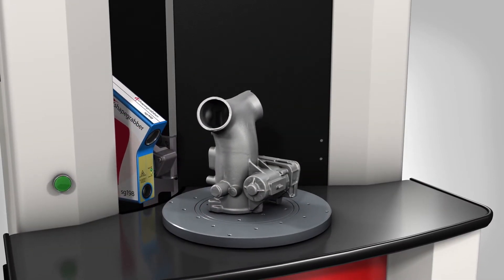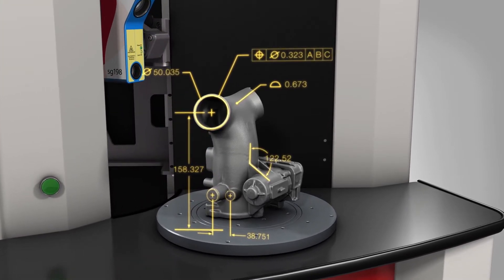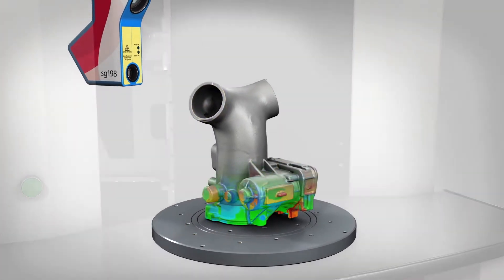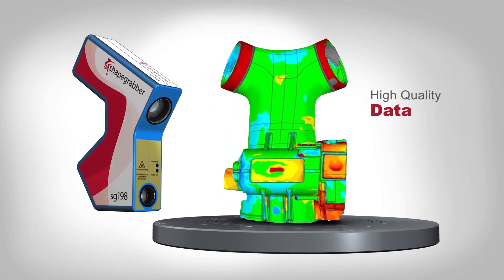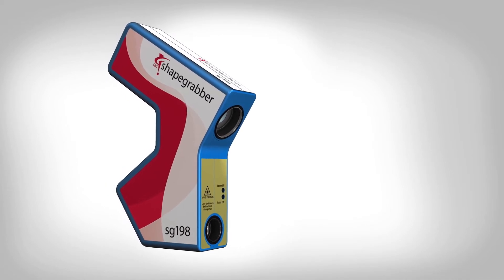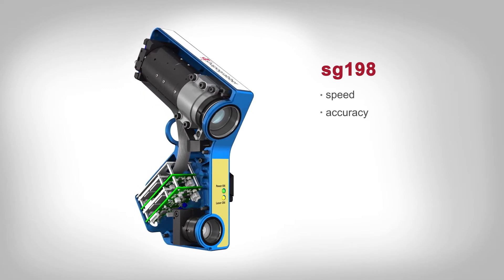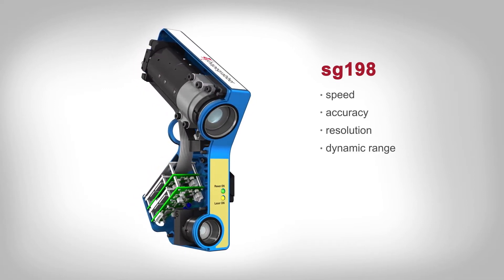All aspects of the AI620 are carefully engineered to ensure highly accurate measurements. At the heart of the AI620 is the new SG198, the latest generation of ShapeGrabber laser scan heads offering exceptional speed, accuracy, resolution and dynamic range.